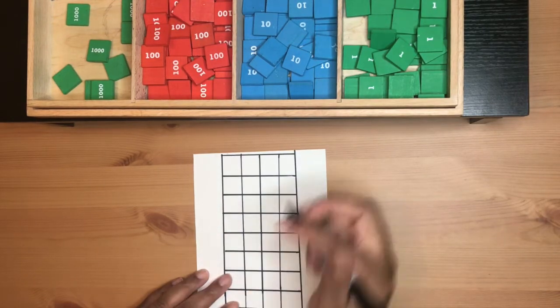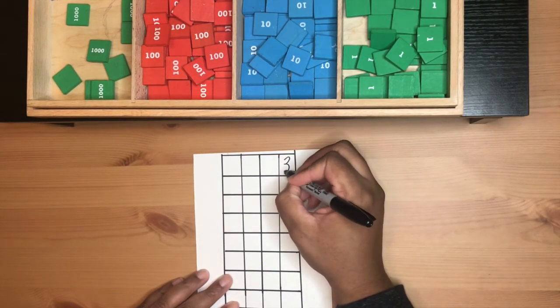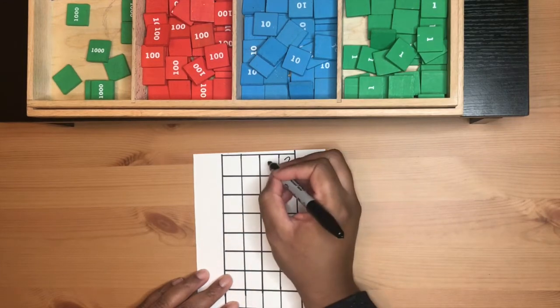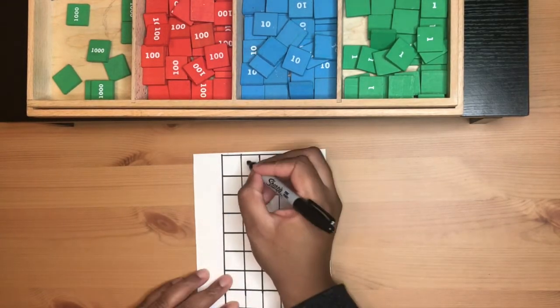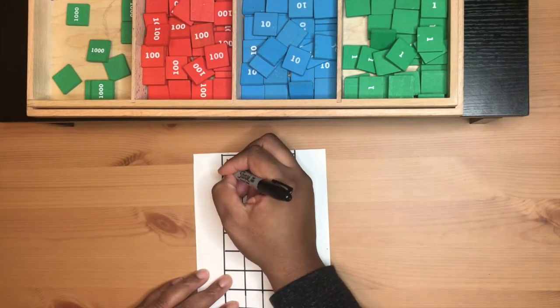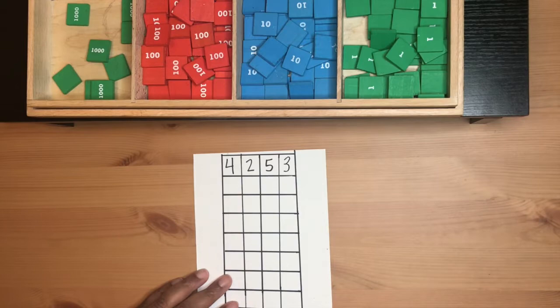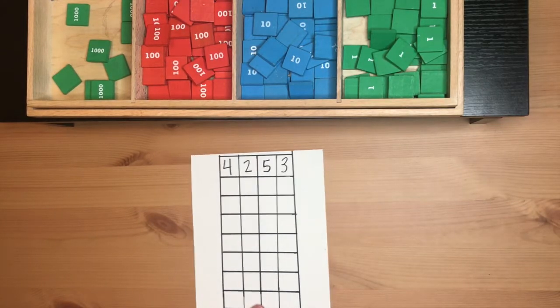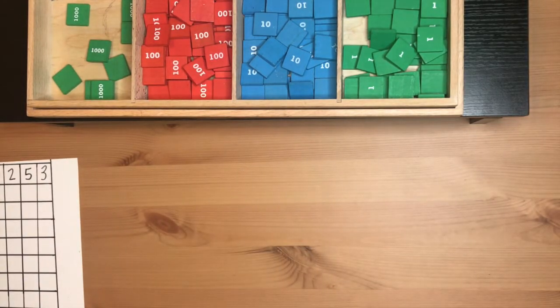I'm going to make up a four digit quantity: three units, five tens, two hundreds, four thousands. And I made sure that they were between zero and nine, each of those numbers. Now I'm going to go ahead and build the quantity.